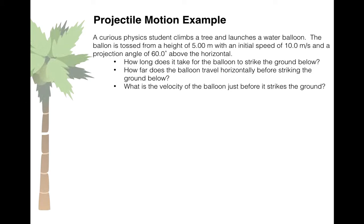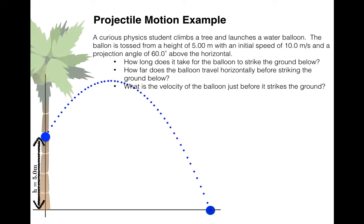So imagine a curious physics student climbs a tree and launches a water balloon. The balloon is tossed from a height of 5 meters with an initial speed of 10 meters per second and a projection angle of 60 degrees above the horizontal. How long does it take for the balloon to strike the ground below? How far does the balloon travel horizontally before striking the ground? And what is the velocity of the balloon just before it strikes the ground?